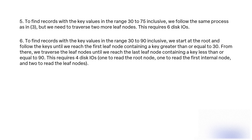Query 6: To find records with key values in the range 30 to 90 inclusive, we start at the root and follow the keys until we reach the first leaf node containing a key greater than or equal to 30. From there, we traverse the leaf nodes until we reach the last leaf node containing a key less than or equal to 90. This requires 4 disk I/Os: 1 to read the root node, 1 to read the first internal node, and 2 to read the leaf nodes.